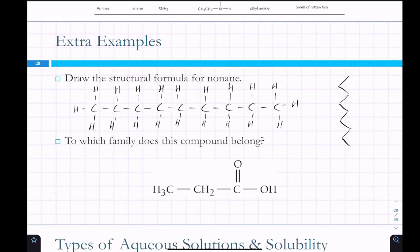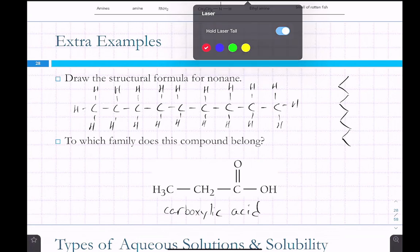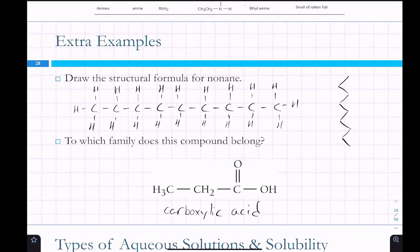Okay, so what family would this compound belong to? It's got single bonded carbons but it's also got these oxygens in it. Yeah, it's a carboxylic acid. So if you have carbon with a double bond to an oxygen and then a single bond to an oxygen with an OH, carboxylic acid. If it doesn't have the hydrogen then it's a carboxylate. I don't expect you to remember that distinction, just throwing it out there.